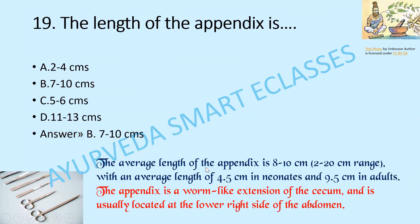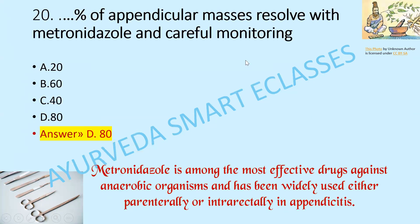The average length of the appendix is 8–10 cm. Our answer option is 7–10 cm, with an average length of 4.5 cm in neonates and 9.5 cm in adults. The appendix is a worm-like extension of the cecum, usually located on the lower right side of the abdomen. Approximately 18% of appendicular masses resolve with metronidazole and careful monitoring. Metronidazole is among the most effective drugs against anaerobic organisms and has been widely used in appendicitis.